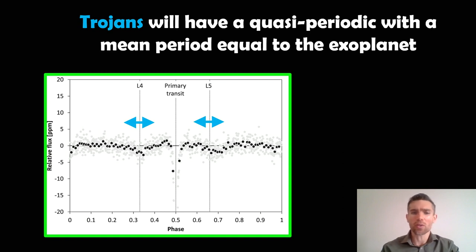So they move back and forth around the L4, L5. So you might find that the transits are not always exactly there, but they're in and around L4, L5, if they do exist there.